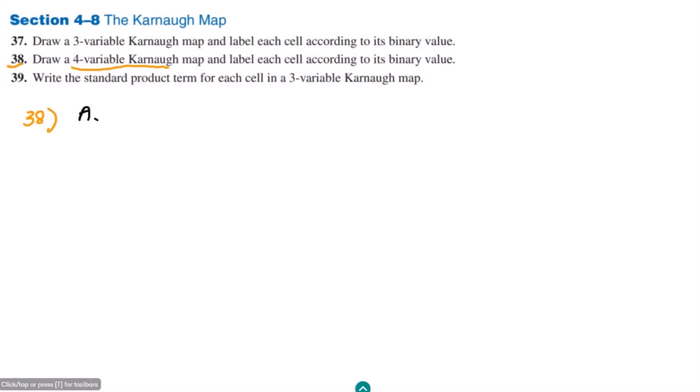In the four-variable Karnaugh map, which variables can we have? Let me call those variables as A, B, C, D. These are the variables which we are going to use here in the four-variable Karnaugh map.